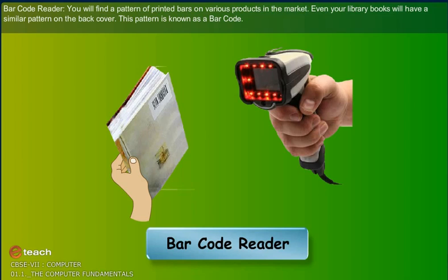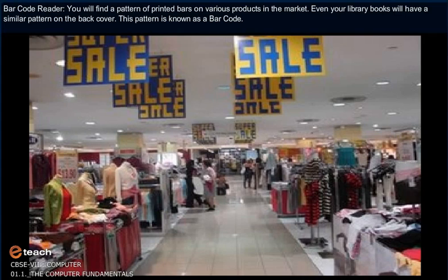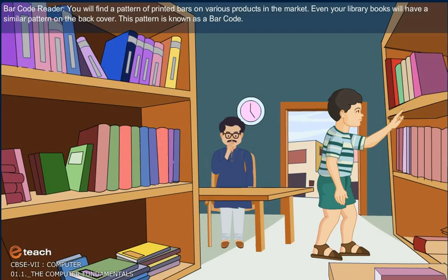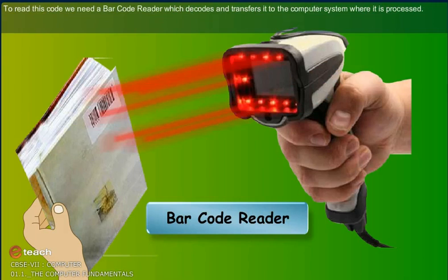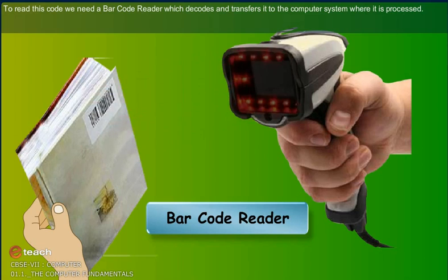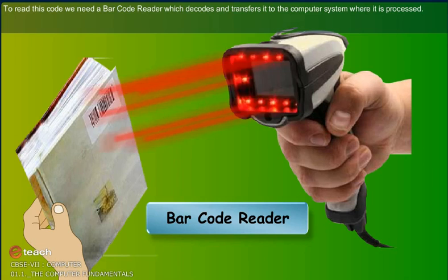Barcode reader: You will find a pattern of printed bars on various products in the market. Even your library books will have a similar pattern on the back cover. This pattern is known as a barcode. To read this code, we need a barcode reader which decodes and transfers it to the computer system where it is processed.